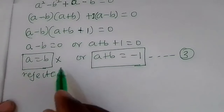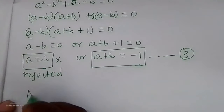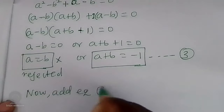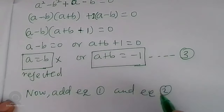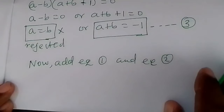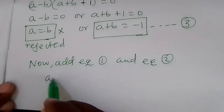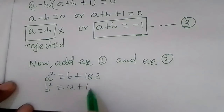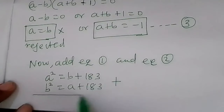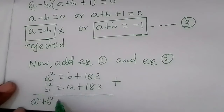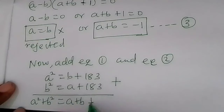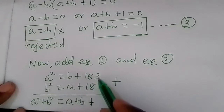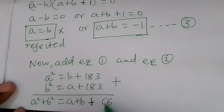Therefore we use a plus p equals negative 1, which we call equation 3. Now let us add equation 1 and equation 2. We have a squared plus p squared equals a plus p plus 2 times 1/3. Adding the constants: 1/3 plus 1/3 gives 2/3, so we have a squared plus p squared equals a plus p plus 2/3. We call this equation 4.